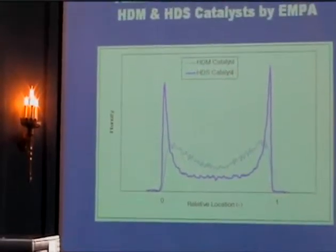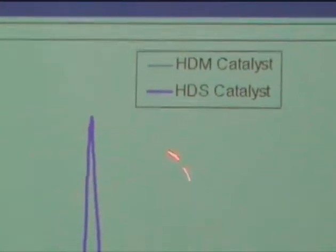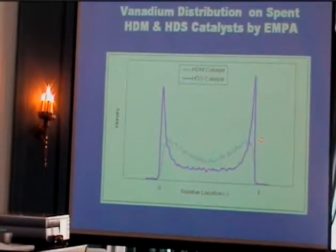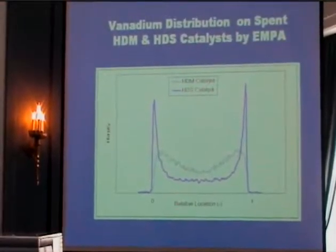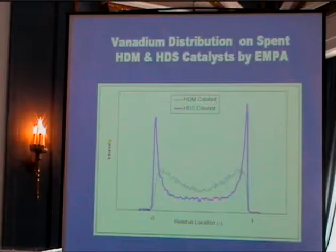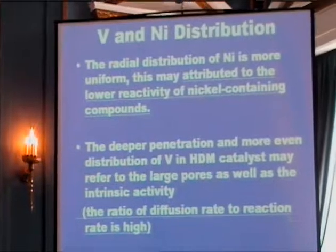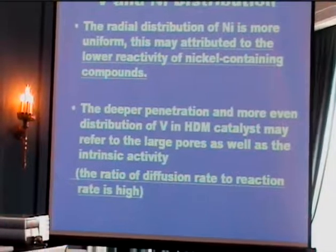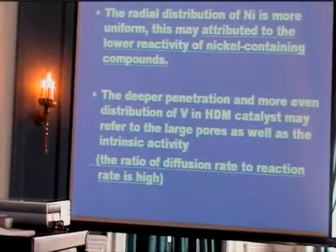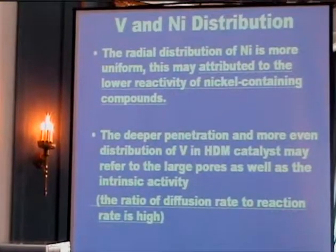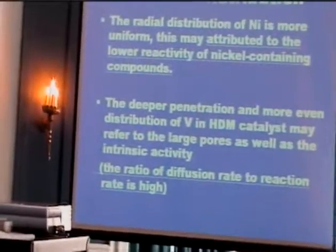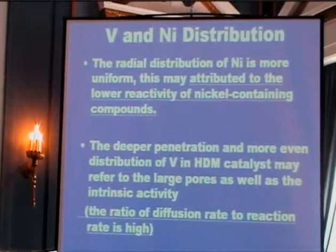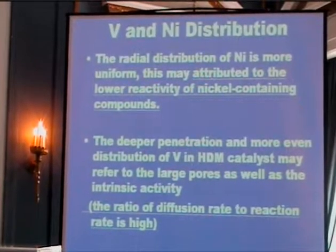When we go to vanadium, in the case of catalyst A — which is mainly dedicated for metal removal — the vanadium is distributed uniformly. However, for catalyst B, the vanadium is more concentrated at the outer edge of the catalyst. The uniform radial distribution of nickel may be due to the lower reactivity of nickel in hydrotreating of residual oil. For vanadium, catalyst A has larger pores, so vanadium can be distributed uniformly, and the ratio of diffusion rate to reaction rate is much higher in this case.